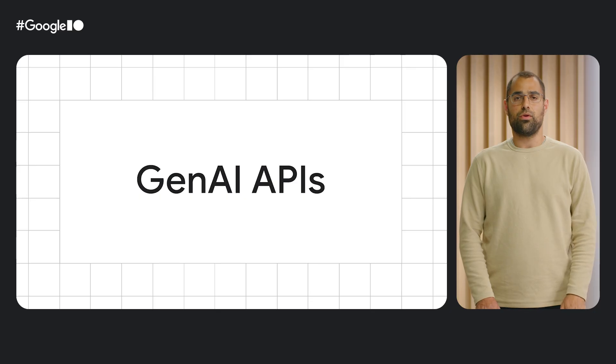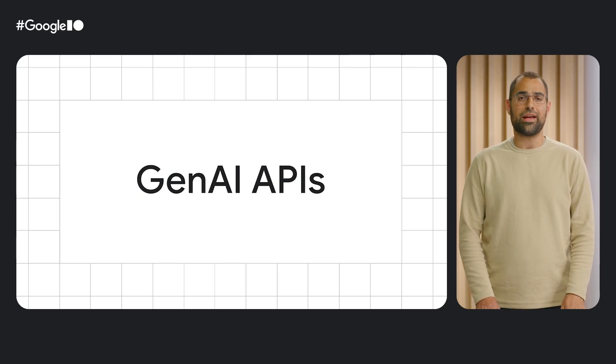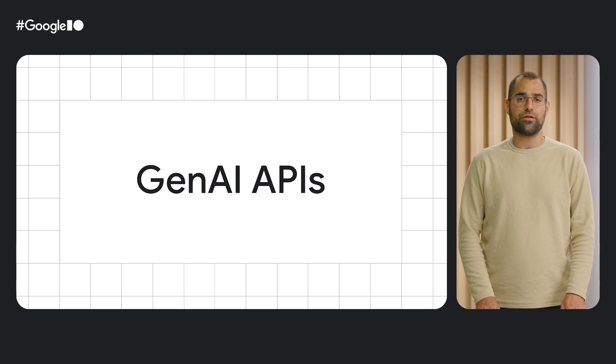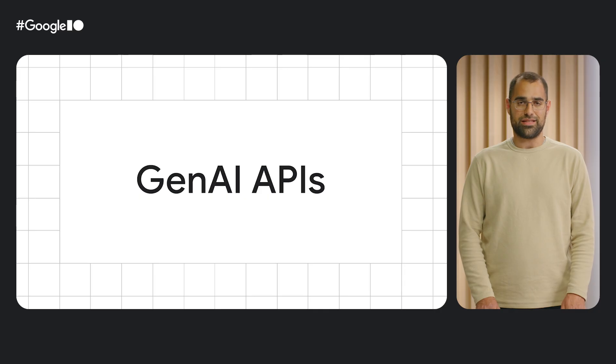Between our broad language model support and high degree of customization, we are confident that you can get the right language model running on mobile and web that fits your needs. But as we've worked with a lot of developers over the last year to build impactful features on top of language models on the edge, we've heard time and time again that there are additional tools they need to deliver these AI features. Today we'll talk about two of these: on-device retrieval augmented generation, or RAG, and on-device tool calling.